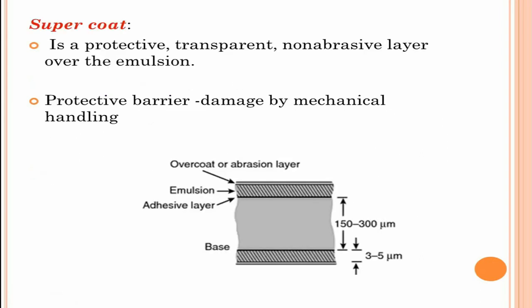Next is the supercoat, an additional layer of gelatin. It is a protective, transparent, non-abrasive layer over the emulsion that serves as a protective barrier from damage by mechanical handling such as scratching, contamination and pressure from rollers during automatic processing.